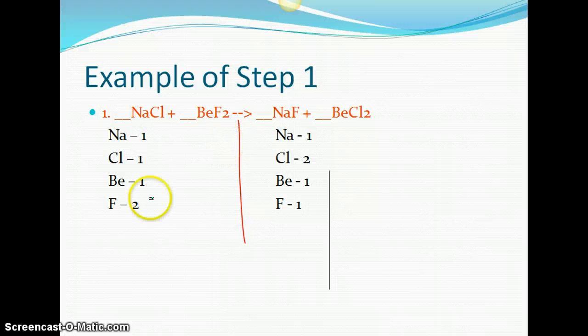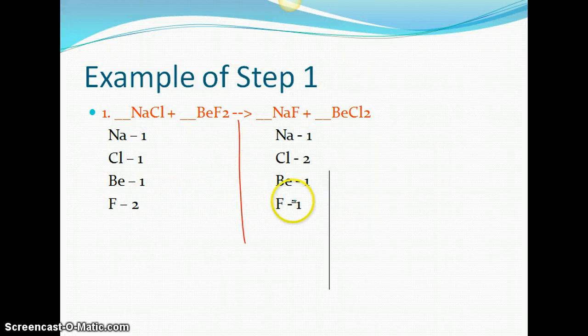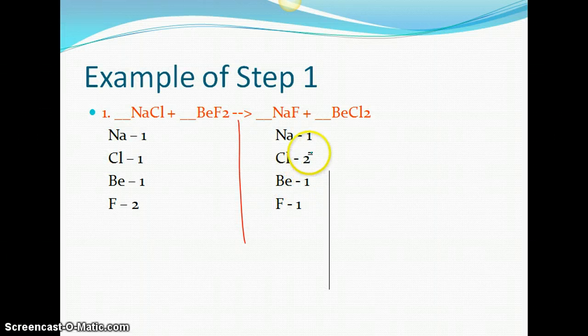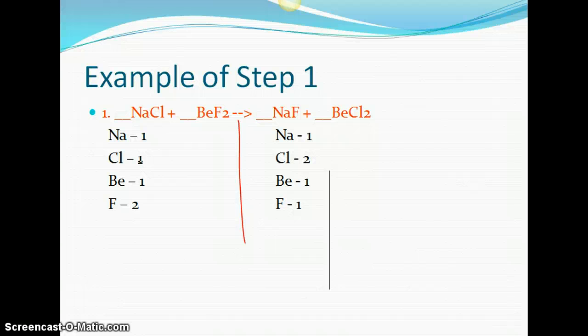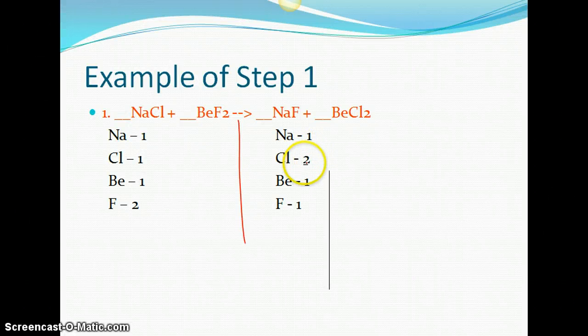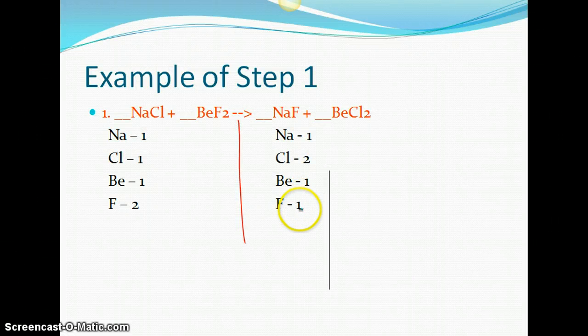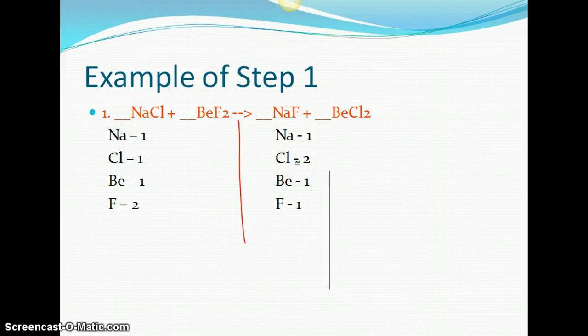Now what we want to do is balance these equations. So notice fluorine is not balanced and chlorine is not balanced. So our goal is to try and balance those numbers out and have them equal on both sides. The reason they need to be equal is because of the law of conservation of mass. We cannot create or destroy mass. So you can't have all of a sudden created extra chlorine on the right side or you couldn't have destroyed some of the fluorine on the right side. We have to show that it's equal on both sides of the equation.